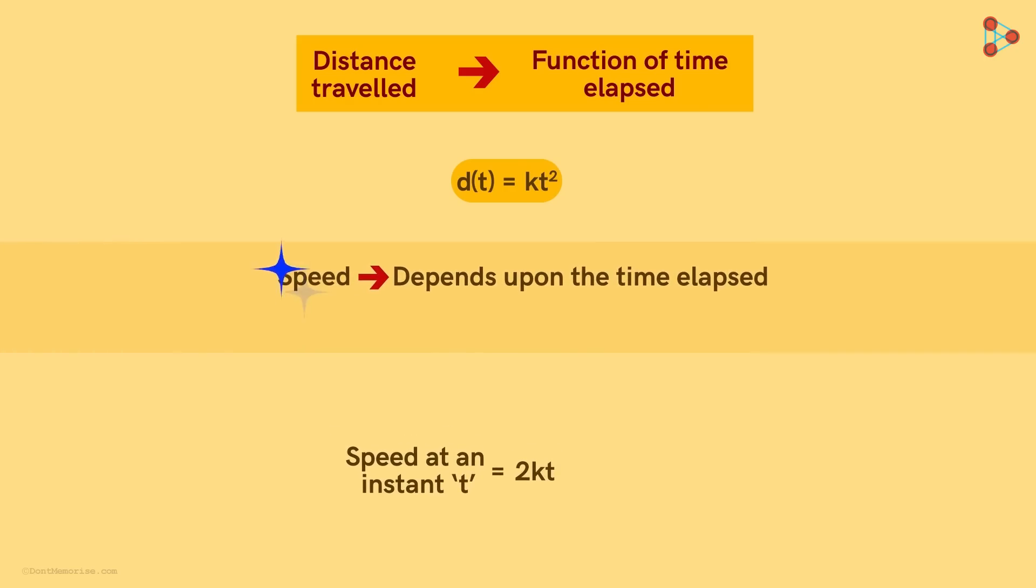In other words, the speed is also a function of time. In this case, we saw that the speed of the object will follow this relationship. Let's denote the speed by a new variable, S.